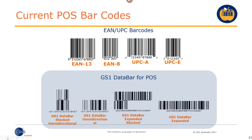GS1 data barcodes will not replace the existing point of sale barcodes at point of sale. There are quite a lot of different data bar barcodes. The one being implemented in Australia for loose produce is the GS1 data bar stacked omnidirectional. We've essentially taken a barcode, cut it in half, and stacked it on top of itself to provide a shape that can fit on small, hard-to-mark items such as a PLU label.